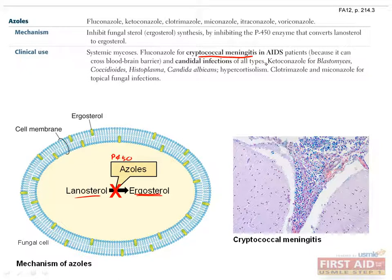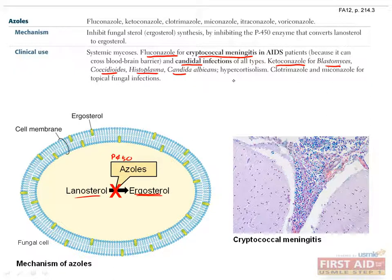The azoles are also used to treat candidal infections. Fluconazole is the drug of choice for cryptococcal meningitis. Ketoconazole is used against blastomyces, coccidioides, histoplasma, candida, as well as the treatment of hypercortisolism. Clotrimazole and miconazole are used for topical fungal infections.